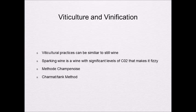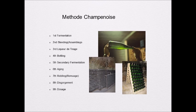Varietals of Ribera del Duero: for red — Tinto Fino, which is Tempranillo. For white — Albillo, locally consumed.